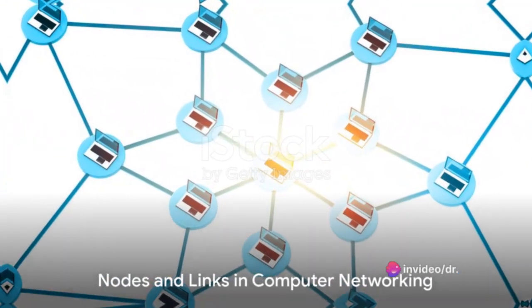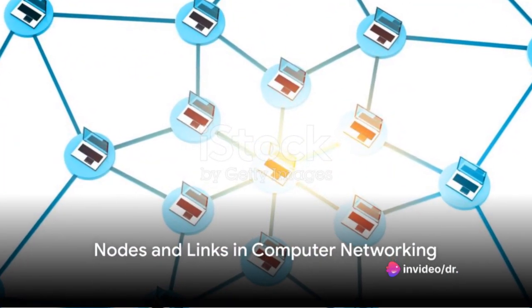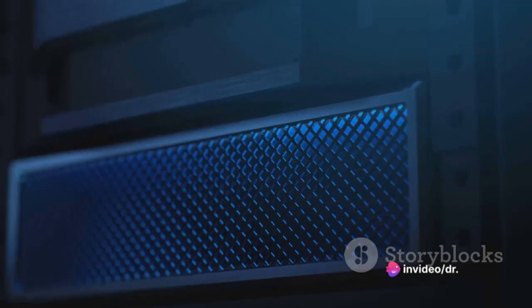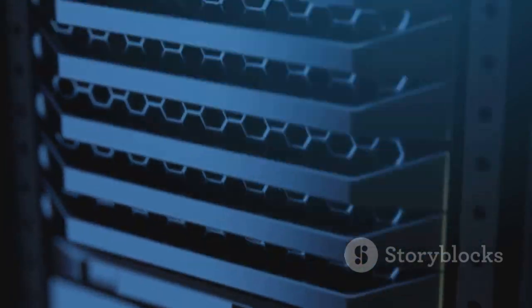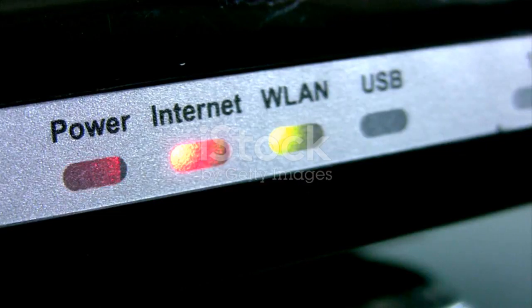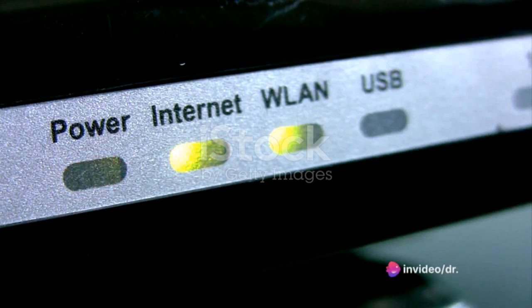The basic building blocks of a computer network are nodes and links. Picture a network node as a bustling bus station or an airport terminal — a hub of activity. In the digital world, these nodes could be anything from a modem, a router, or a computer itself.